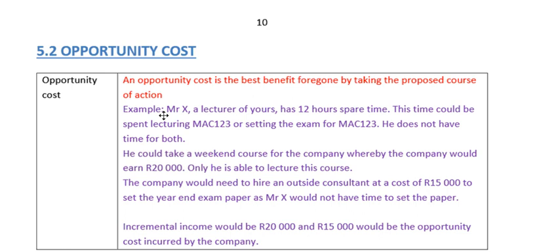Mr. X is a lecturer who has 12 hours of spare time. This time could be spent lecturing MAC 1, 2, 3 or setting the exam for MAC 1, 2, 3 — he does not have time for both. He could take a weekend course for the company where the company would earn 20,000 rand, and only he is able to lecture the course. The company would need to hire an outside consultant at a cost of 15,000 to set the year-end exam paper, as Mr. X would not have time to set the paper. If he lectures the course and he's the only one that can, the company will earn 20,000 rand — but they are going to have to hire somebody else to set the exam, which will cost 15,000 rand.